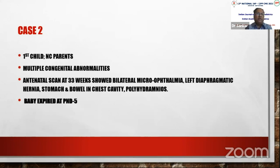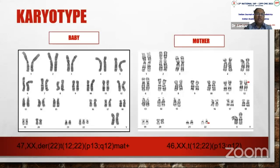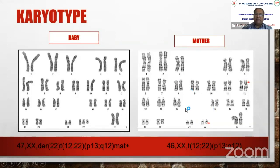Another case: non-consanguineous parents, first child with multiple congenital abnormalities. Antenatal scan at 33 weeks showed bilateral microphthalmia, left diaphragmatic hernia, stomach and bowel in chest cavity, and polyhydramnios. Baby expired on postnatal day five. Karyotype showed extra material resembling chromosome 22 — a marker or derivative chromosome. Parental karyotype revealed a 12;22 balanced translocation in the mother, carrying a one-third risk of recurrence. Amniocentesis is required in every subsequent pregnancy.